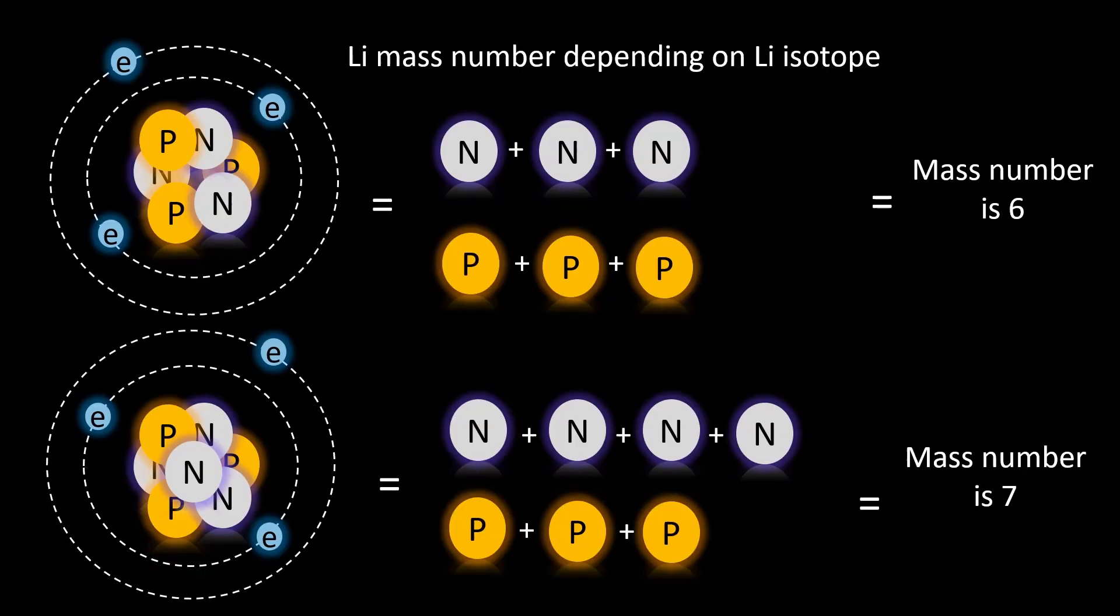For example, lithium may have a mass number of 6 or 7, depending on its isotope or number of protons plus neutrons.